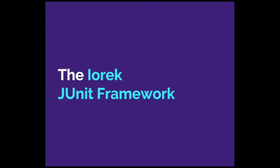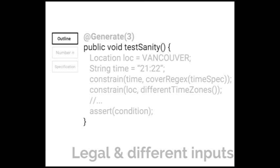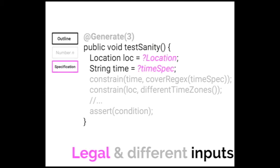So we built this into a JUnit framework. And this is just one interface for Yorick. And the way that this interface works is that you write an outline of a test. And this outline looks a lot like a regular unit test, except that instead of concrete inputs, like 2122 in Vancouver, you can instead leave these inputs blank, and refer to some specification of what makes them legal. You can then constrain what makes any pair of inputs different for the sake of testing, and then tell Yorick to generate a certain number of these, in this case 3.